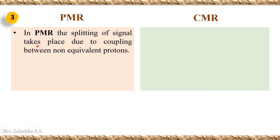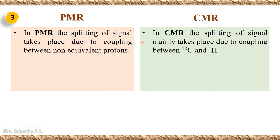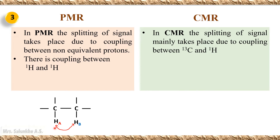In PMR, the splitting of signals takes place due to coupling between non-equivalent protons. There is a magnetic interaction between non-equivalent protons, and due to this magnetic interaction, splitting of the signal takes place, which is known as coupling. If HA and HB are non-equivalent protons, then there is a coupling between HA and HB, due to which splitting of the signal takes place.